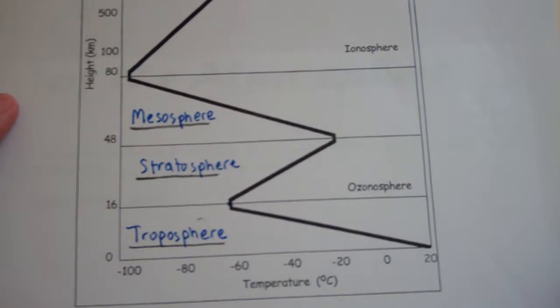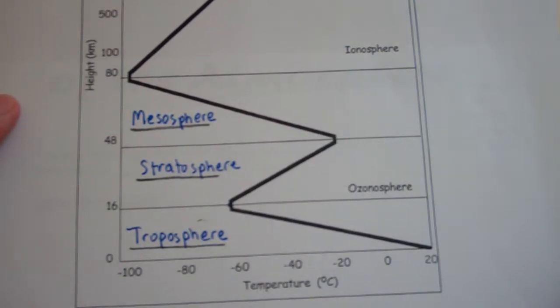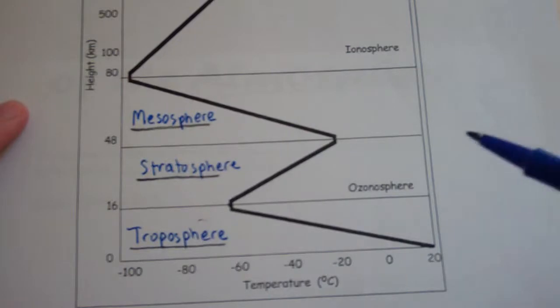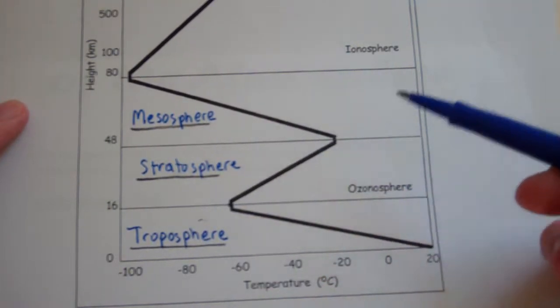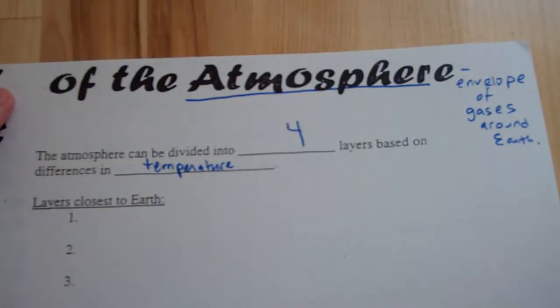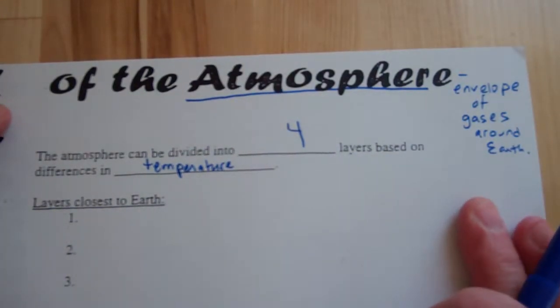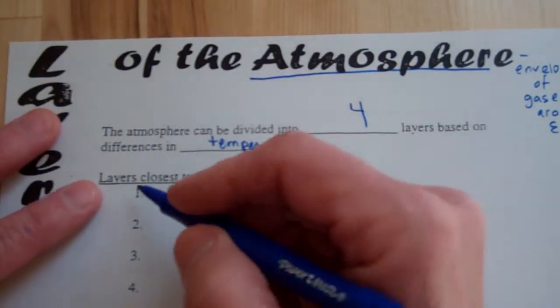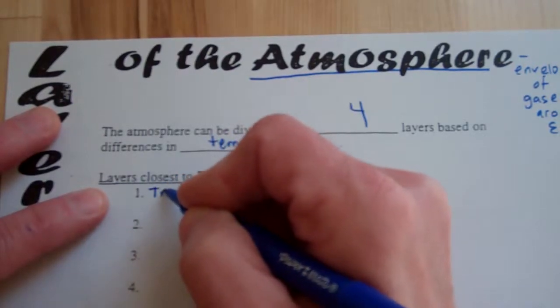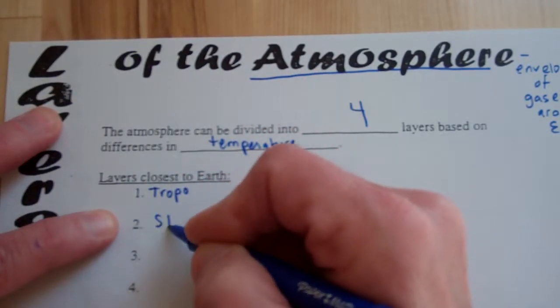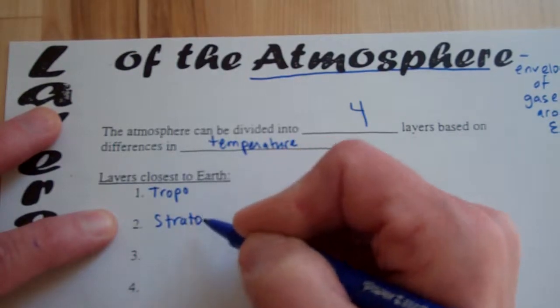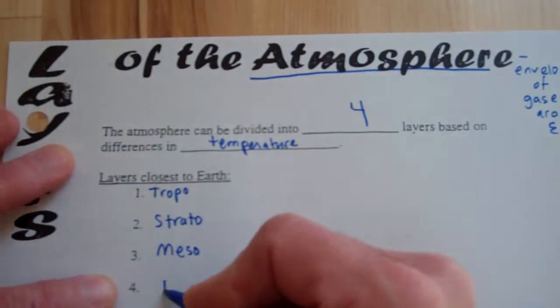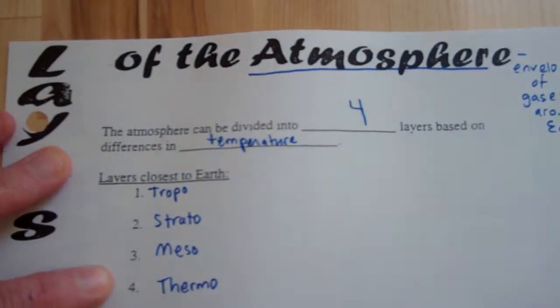And then it starts getting hotter until you get to the top of the stratosphere, and then it changes, and so on. In fact, that's how scientists decided to put a boundary at each layer. They named the different layers, and they set the boundaries based on those drastic changes in temperature. So the layers are based on differences in temperature, and the layers, starting with the closest one to the earth, troposphere, stratosphere, mesosphere, and then thermosphere.